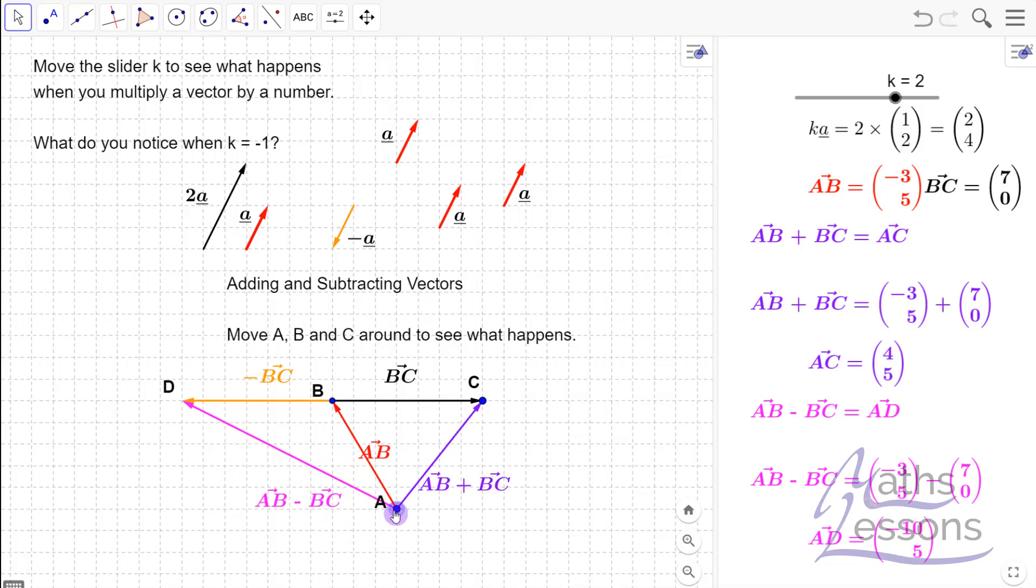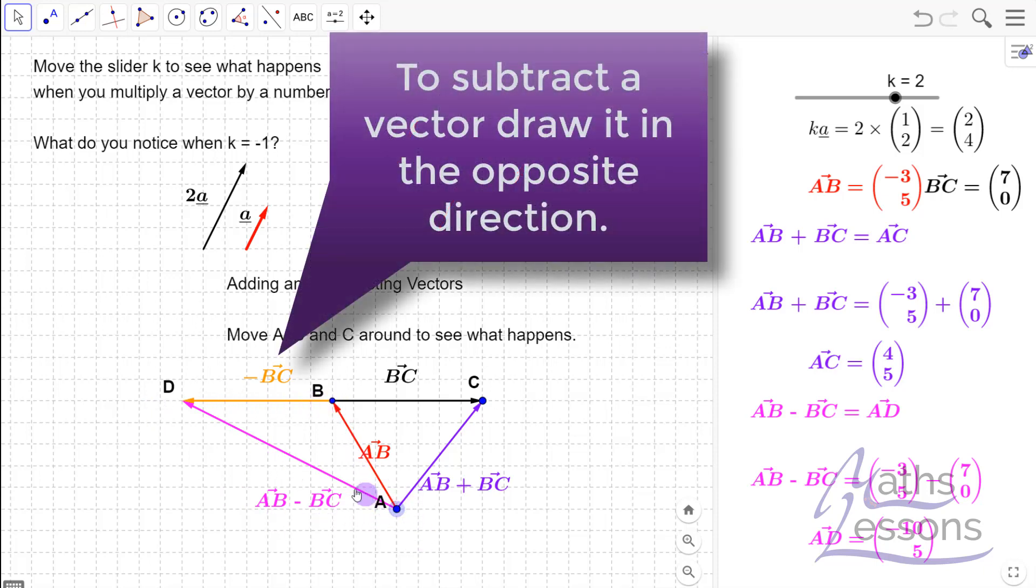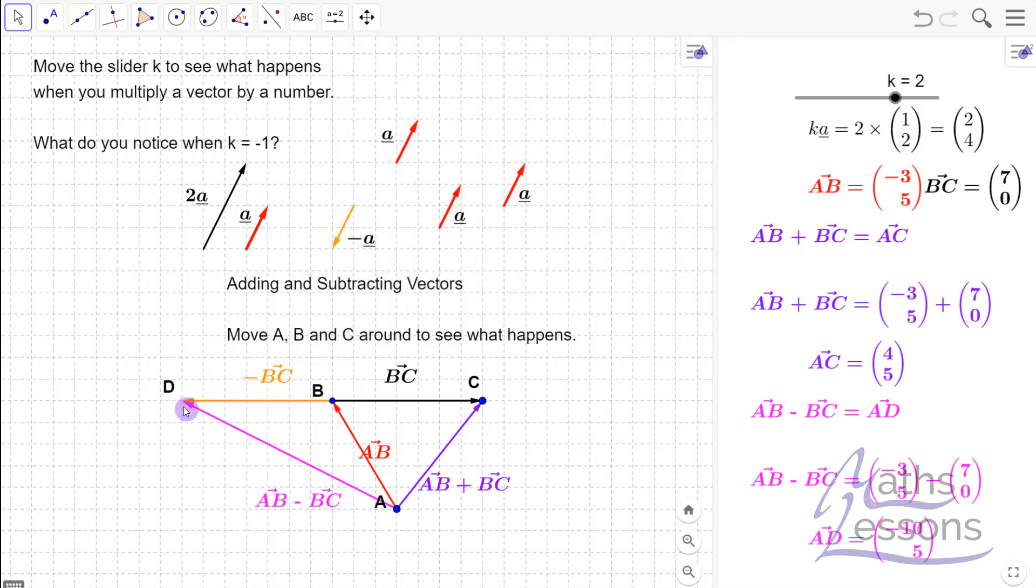And if you want to subtract two vectors, then all we do instead of adding the vector on, we just draw it in the opposite direction. So this is now AB minus BC going along there. So the result from A to D here is AB minus BC, so we can see that also having the same effect.